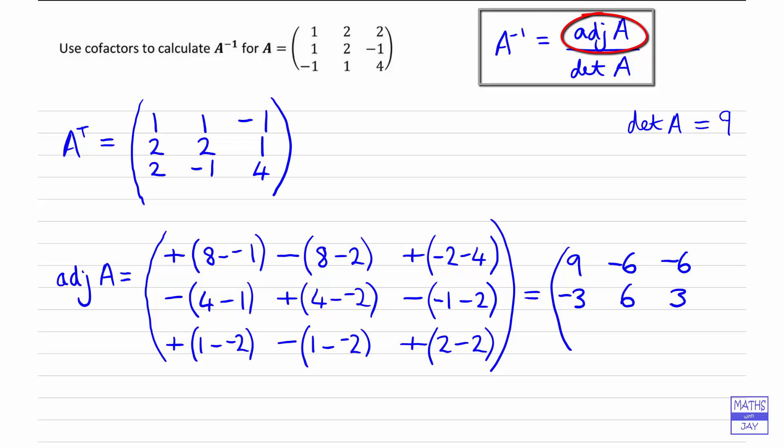And 1 plus 2 is 3. Another 1 plus 2. But then we've got a negative in front of that, so negative 3. And the last one, 2 minus 2, will give us 0. So that is the simplified form of the adjoint or the adjugate.